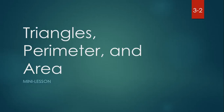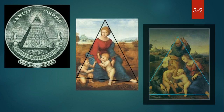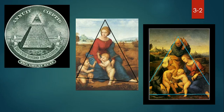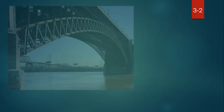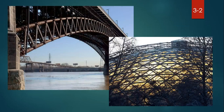Let's talk about triangles, perimeter, and area. You'll see triangles a lot in the way that art is composed, and you'll also see triangles a lot in architecture. In architecture, you'll see triangles because they're a stable structure. You may recognize the bridge on the left is the Eads Bridge, and on the right, that's the Climatron at the Missouri Botanical Gardens.